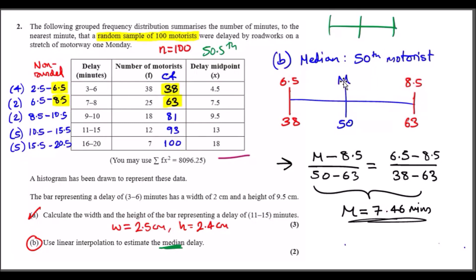Find the cumulative frequency up to and including the 50th person. Looking at the table, the 50th person lies between cumulative frequencies of 38 and 63. So we write 38, 50, and 63. The corresponding minute boundaries are 6.5 and 8.5 — since 38 motorists fall up to 6.5 minutes, and 63 up to 8.5 minutes. The median must lie between these two minute values.